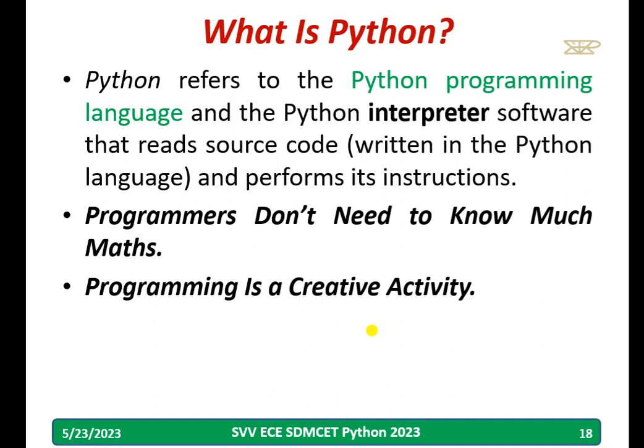What is Python? Basically, Python refers to the Python programming language, and Python is basically an interpreter — it reads source code line by line. All of you know: interpreter means line-by-line execution, while a compiler processes all at once — these things you have studied. Programmers don't need to know much mathematics, and programming is a creative activity.